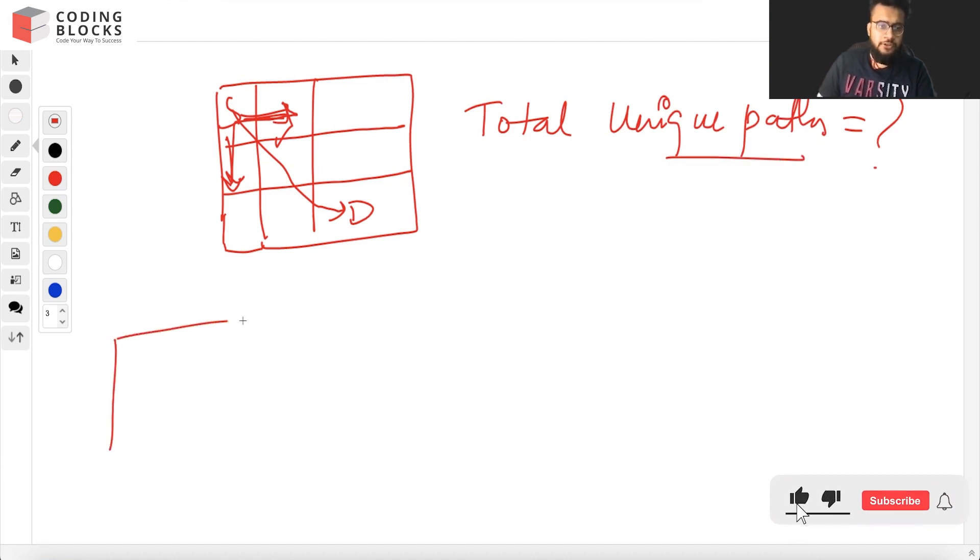Let's try to visualize it for a smaller problem. We have our robot present here and it wants to reach this position. Let's say the total number of ways via this path is 'a' and this path is 'b'. So what will be the total number of ways? The total number of ways will be a plus b.